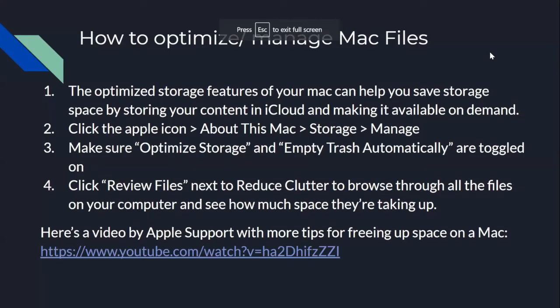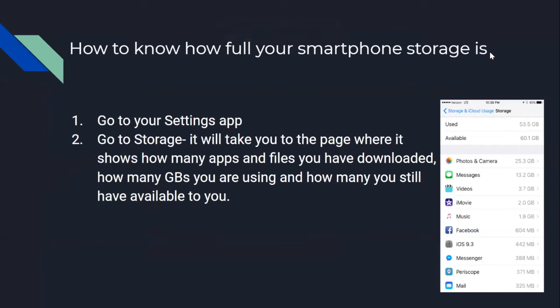Now moving on to the smartphone storage section. To know how full your smartphone storage is, go to the Settings app and click on Storage. If you can't find Storage, you can search up the word 'storage' in the Settings app at the top. Once you click on Storage, it'll take you to a page showing how many apps and files you have downloaded, how much storage each individual app is taking up, and how much storage overall you have left and how much you've used.